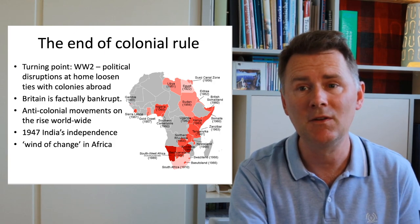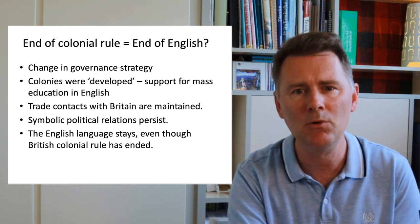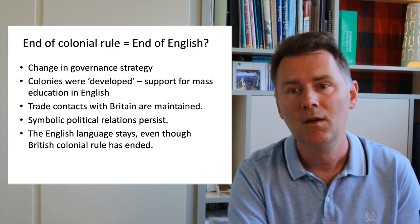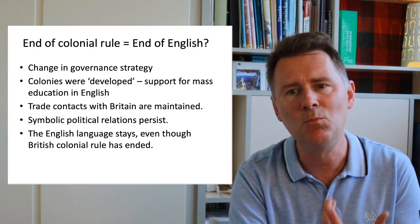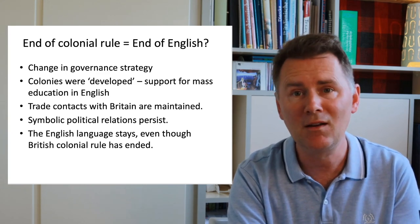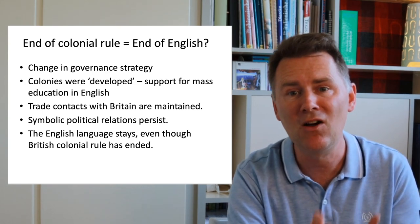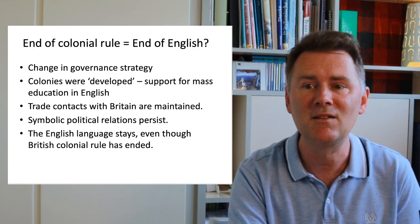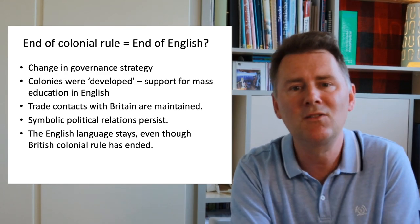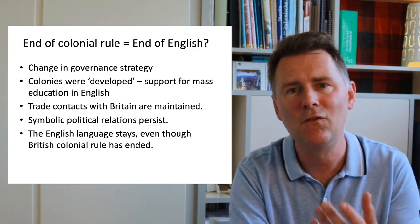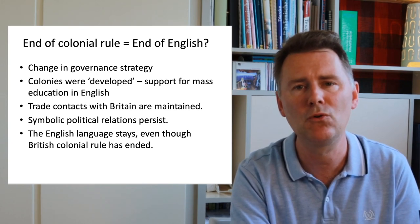What's interesting from a linguistic perspective is that the end of colonial rule did not diminish the importance of English as a global language — if anything, the opposite is true. In the aftermath of colonial rule, Britain adopted a change in governance strategy that created support for mass education in English. Again, the main motivation was not pure humanitarianism but rather economic considerations. Through English as an international language of trade, contracts and symbolic political relations persist, which ultimately translate into economic advantages for the metropolis. The English language stayed even though British colonial rule had ended.